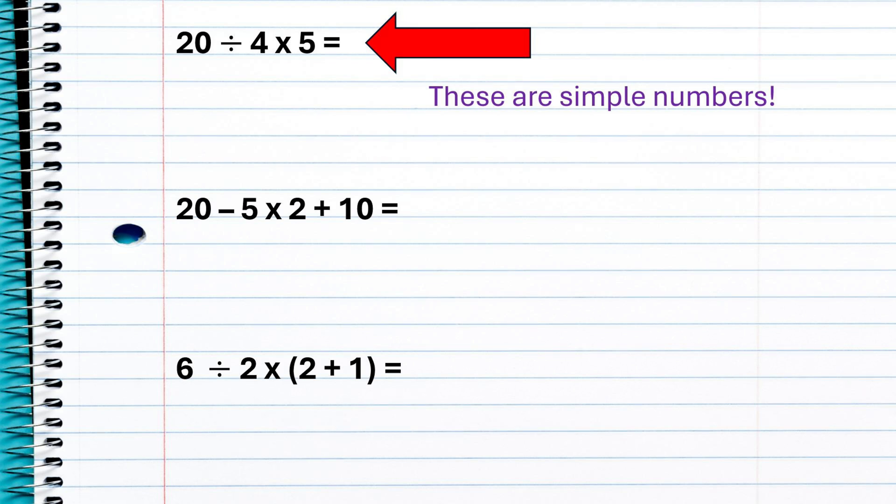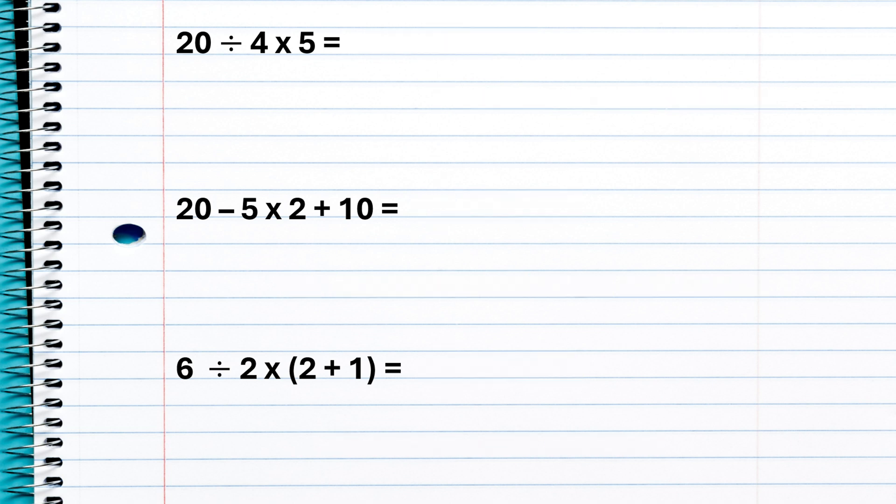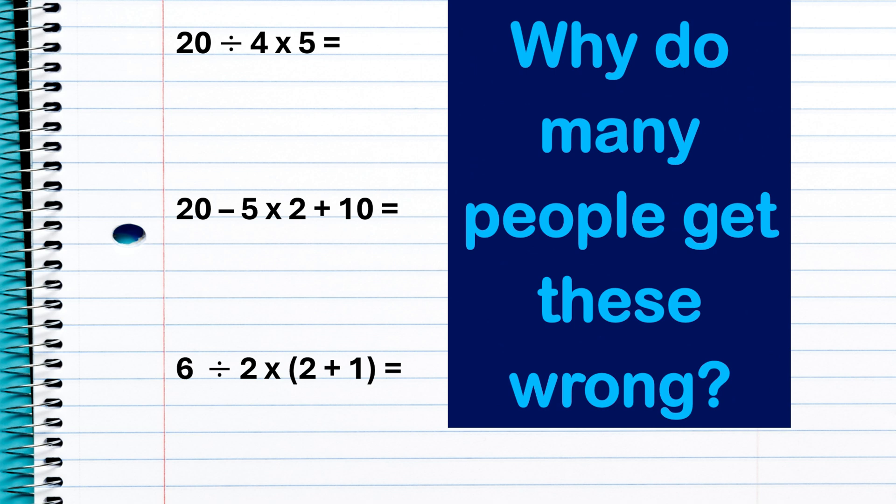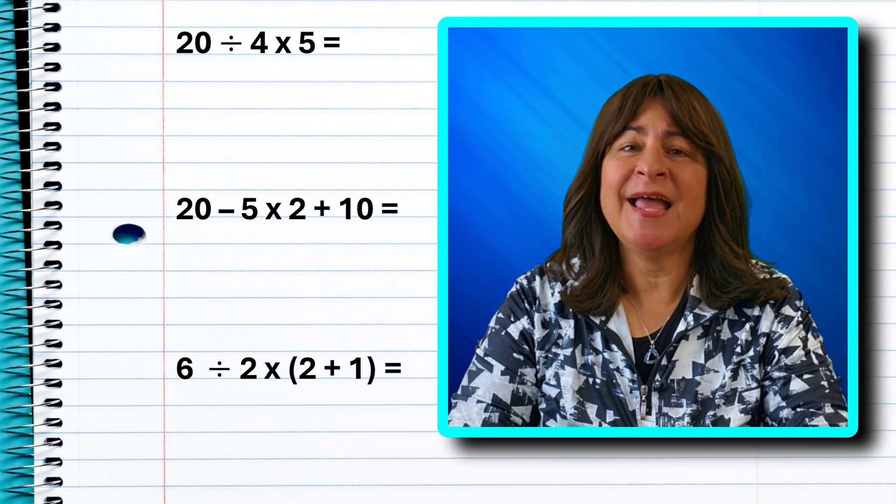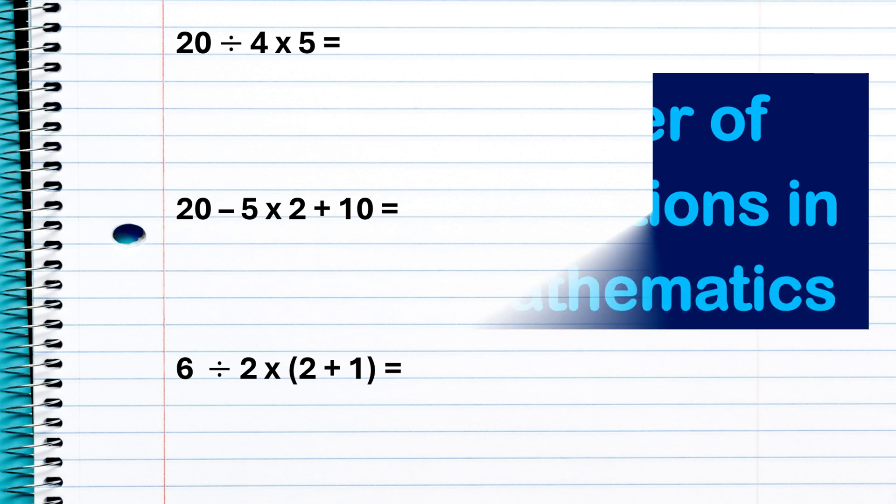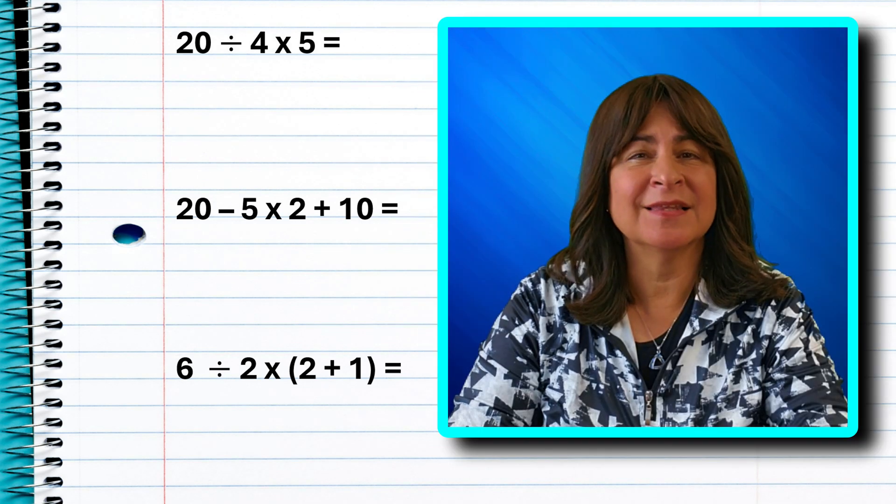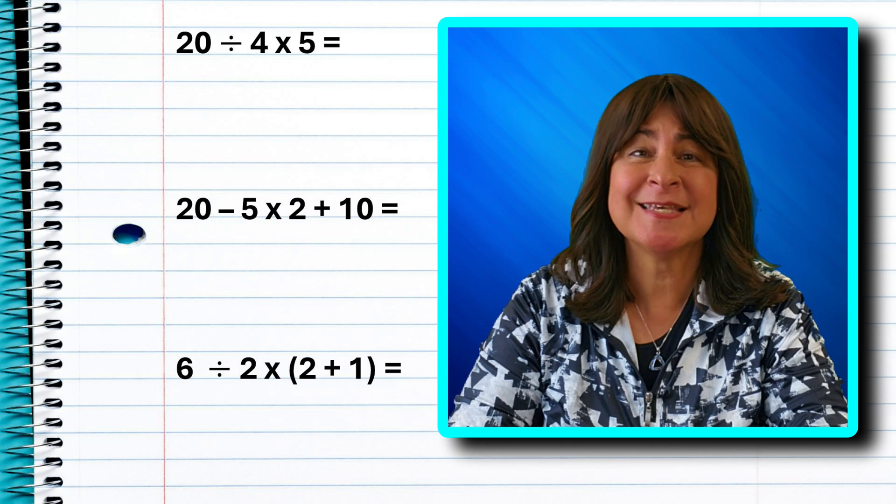The second has addition and subtraction together with multiplication and again stumps many people. The last equation is a real stumper and even went viral on social media. Why do people get these problems wrong? Well, it has to do with the order of operations. What comes first? Multiplication or division? Addition or subtraction? And in the last equation we have those pesky parentheses.